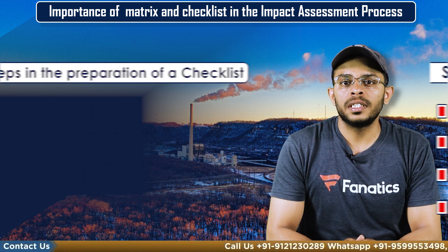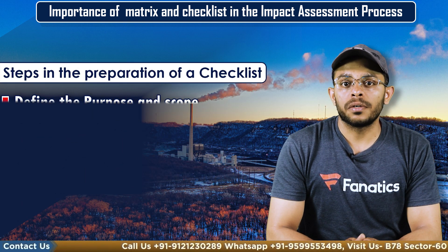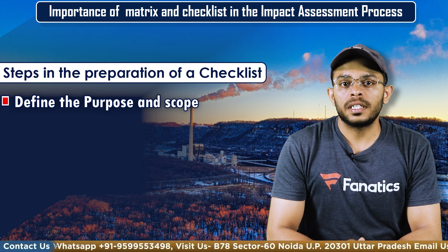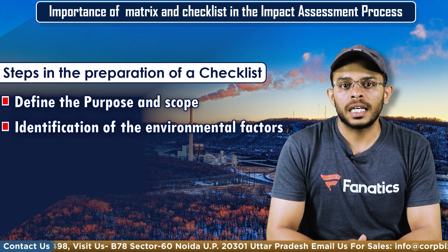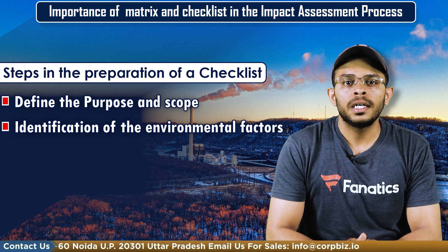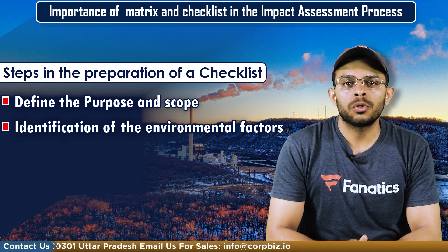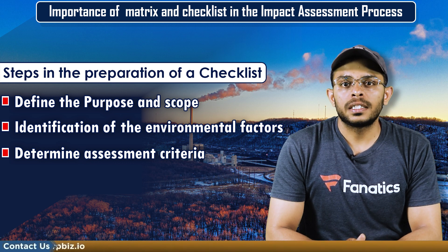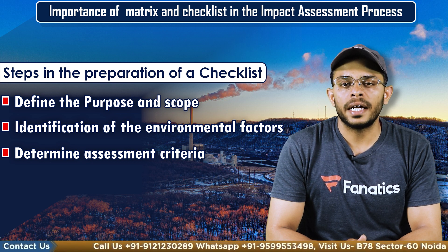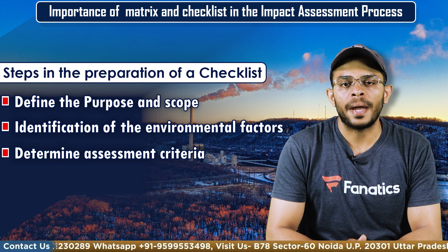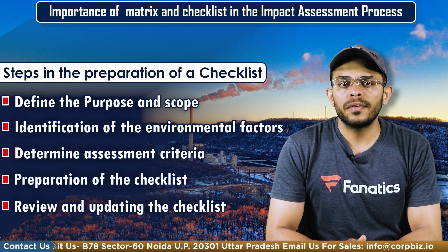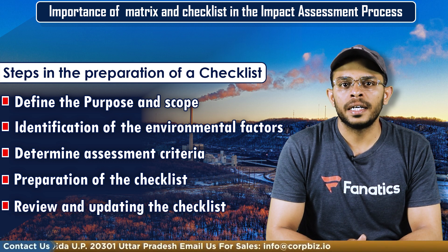Now the steps in the preparation of a checklist. The first step is to define the purpose and scope of the checklist in the EIA process. The next step is identification of the environmental factors such as air quality, water quality, biodiversity, soil quality, noise, and social impacts. The next step is determining the assessment criteria for evaluating the significance of the potential effects of each environmental factor, such as severity, duration, and likelihood of each impact. Next comes the preparation of the checklist. Finally, the consultant will review and refine the checklist and update it when needed.